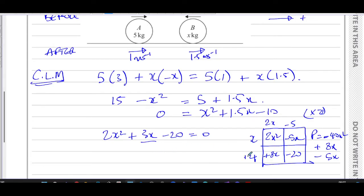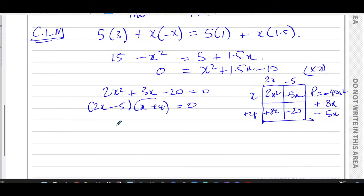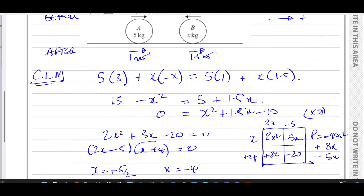So we have now factorized this. You have 2X minus 5 times X plus 4. This is an alternative way of splitting the middle term, just a visual way of doing it. So now we have two values of X: X equals positive 5 over 2, and X equals negative 4.